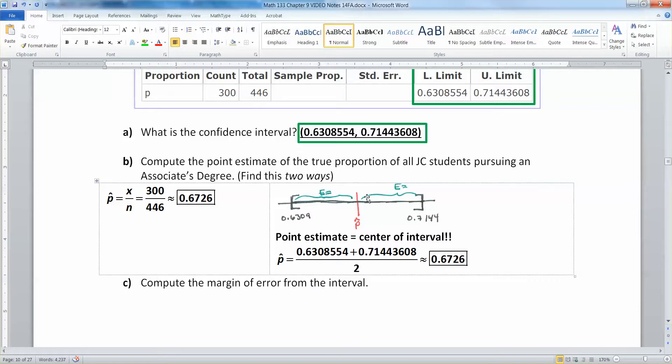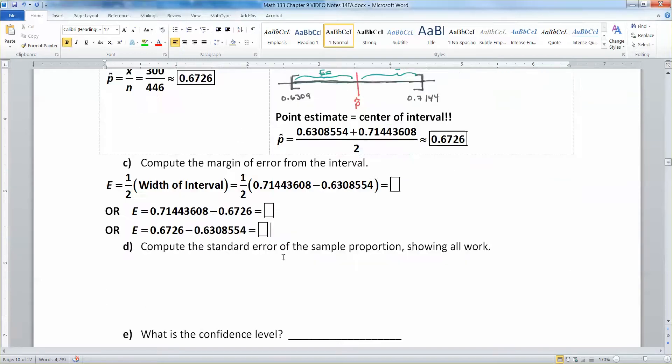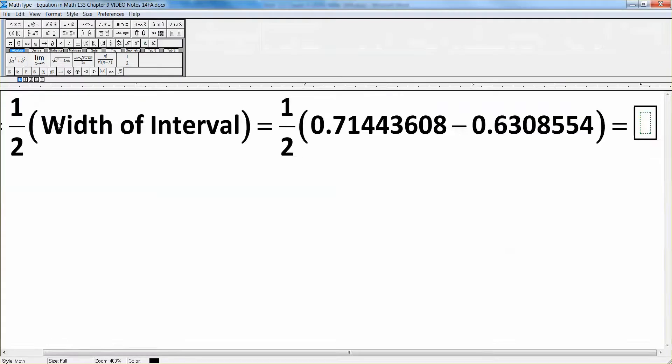Now let's compute the margin of error. The error is the distance from that point estimate in the center to that outer edge. Or in other words, it's half the interval, because the interval is the distance between these two numbers, and then you take half of that. The error is half the width of the interval.